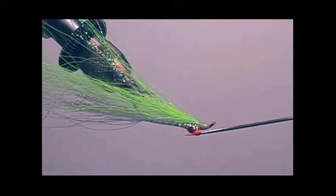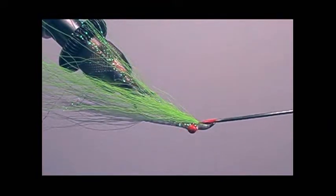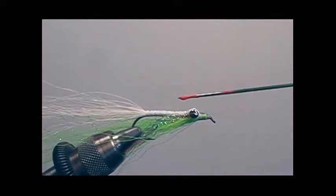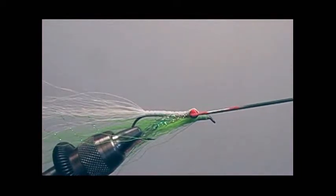Take a little red lacquer paint and cover the dumbbell to give the Clouser minnow red eyes. You can even use yellow or any other color. In this fly I'm using red.